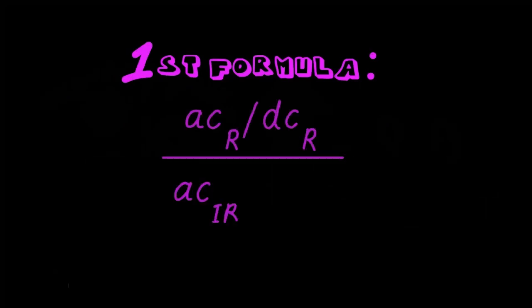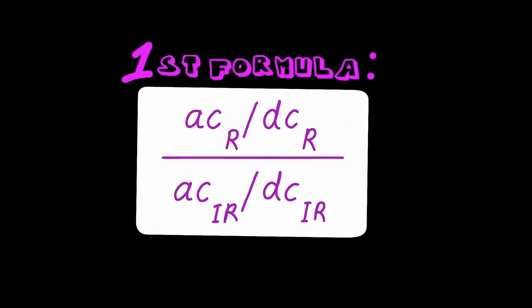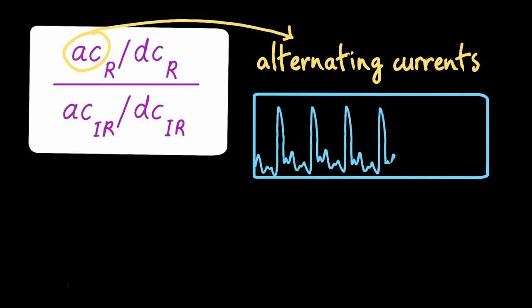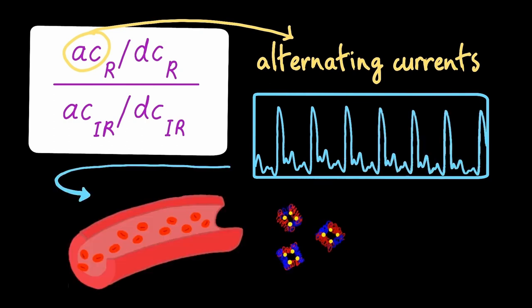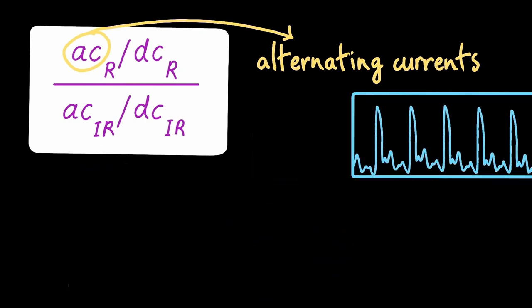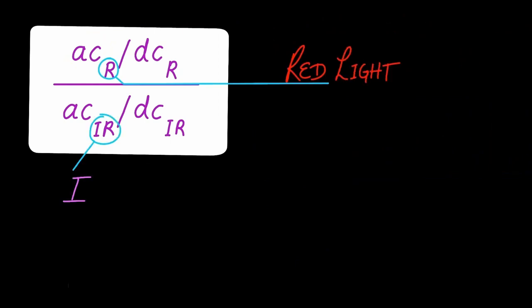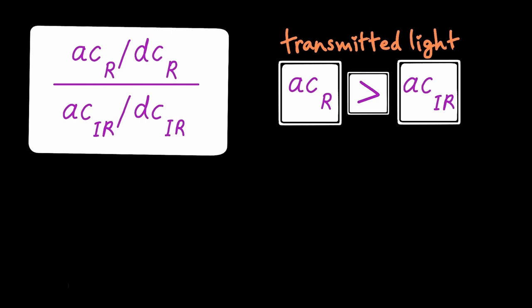The first formula is a ratio taking into account transmitted light. AC or alternating currents are rhythmic and pulsatile like hemoglobin in arterial blood. R stands for red light and IR is infrared light. In this transmitted light ratio, it's better to have more red alternating currents than infrared currents because evidently the IR light was absorbed by a majority of oxygenated hemoglobin.